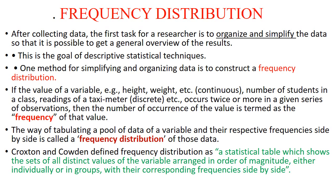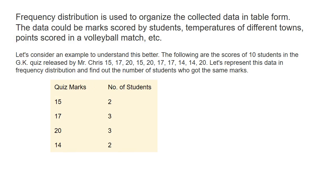Crockstone and Crouden define frequency distribution as a statistical table which shows the sets of all distinct values of the variable arranged in order of magnitude, either individually or in groups, with their corresponding frequencies side by side. Frequency distribution is used to organize collected data in tabular form. The data could be marks scored by students, temperatures of different towns, points scored in a volleyball match, etc. Let's consider an example to understand this better.